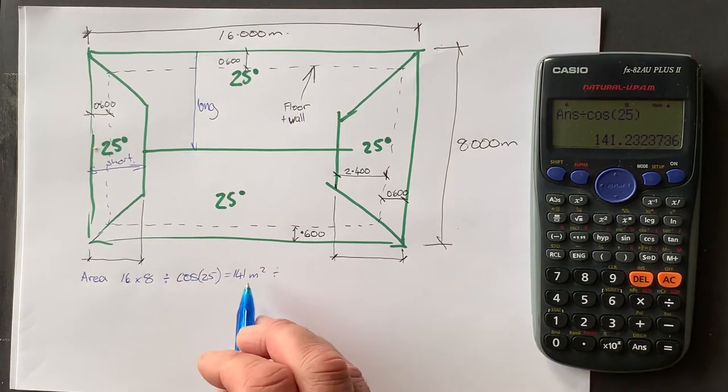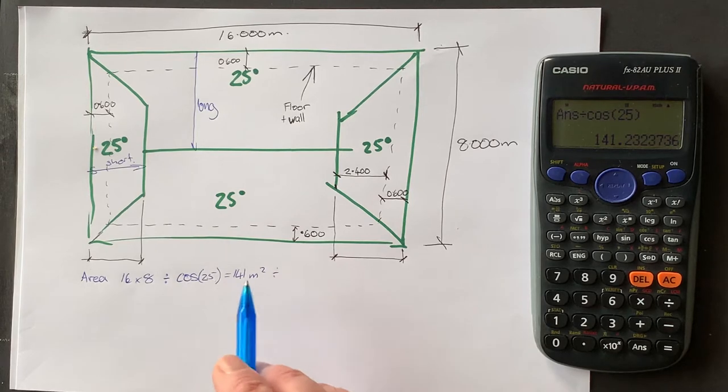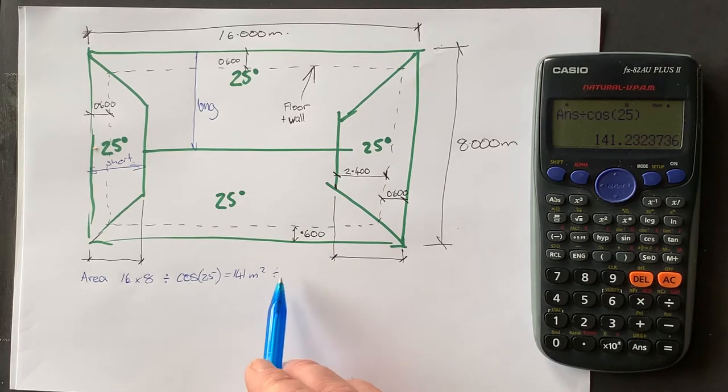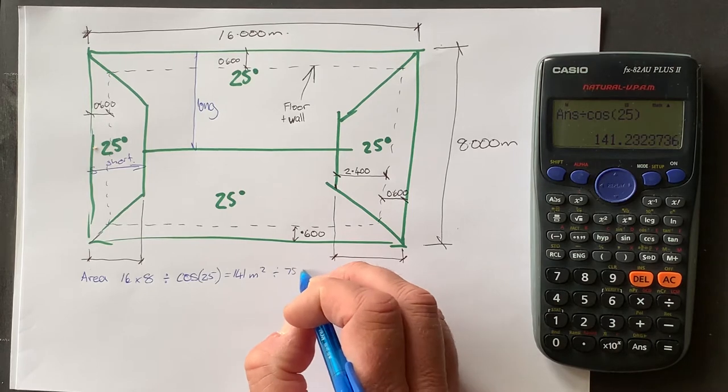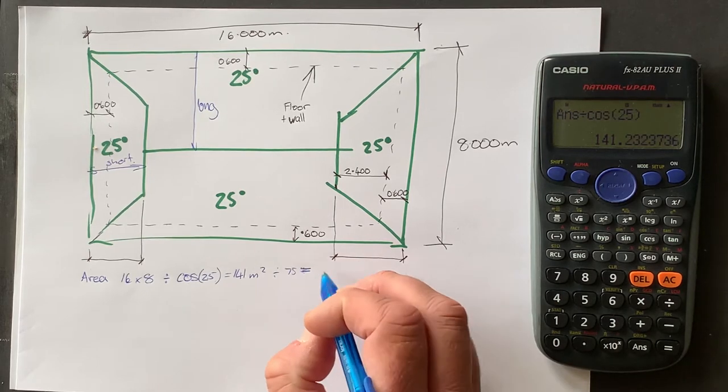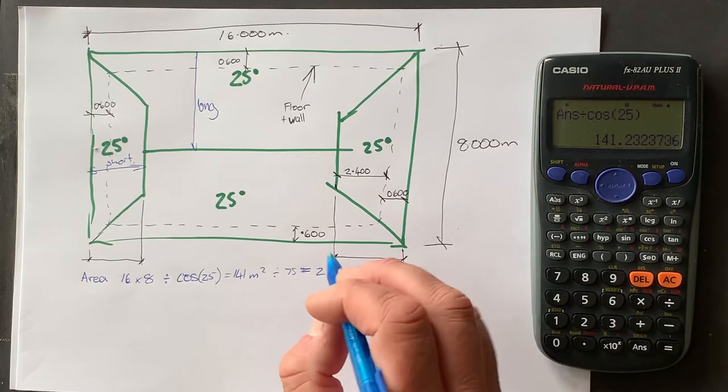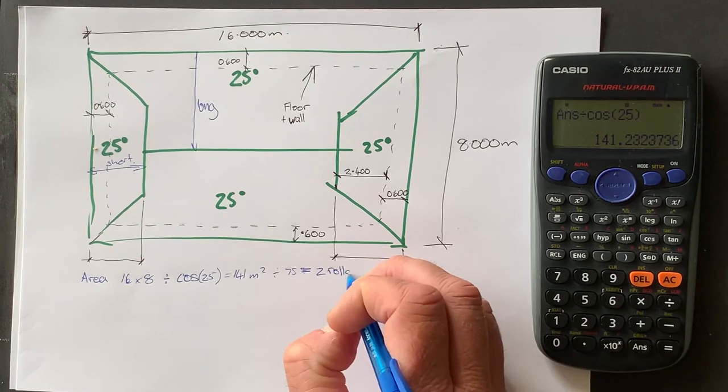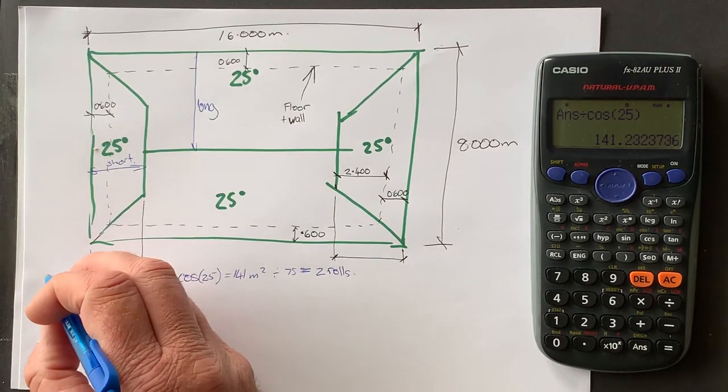And we divide that by 75. And the 75 comes from how many square meters in a roll. And we know that 75 and 75 is 150. So we know the answer will be two rolls. Two rolls we'll do there. So that's the paper.